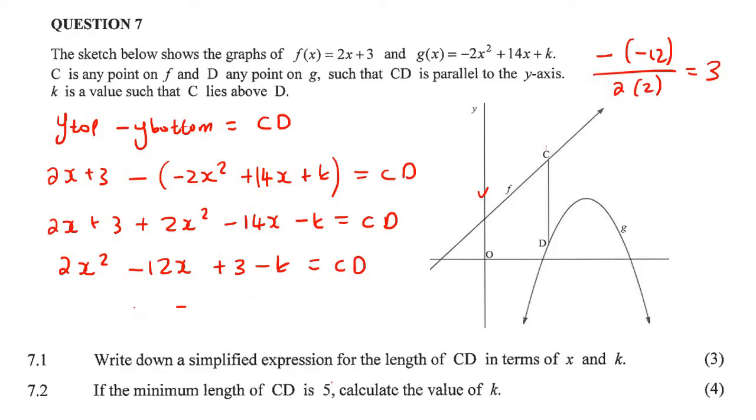So what we can do now is we just go substitute that 3 into this equation. And then we know that when we do that, the length of CD is 5, and then we can just solve for k. So this would be 18 minus 36 plus 3 minus k equals to 5. I'm going to take k over to the right-hand side. And if you solve this, it's pretty straightforward. We should end up with k being negative 20.